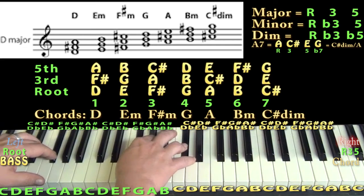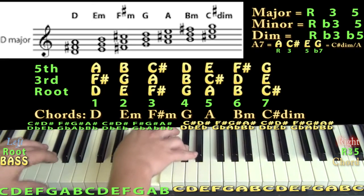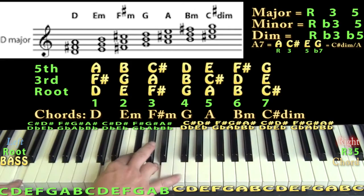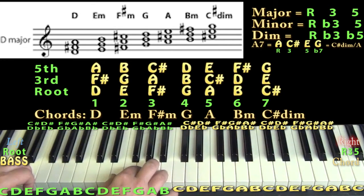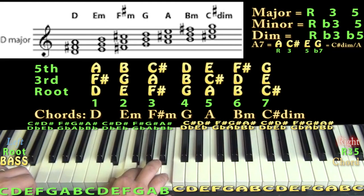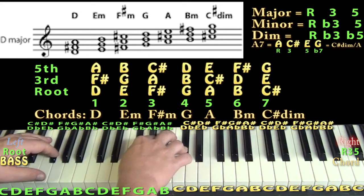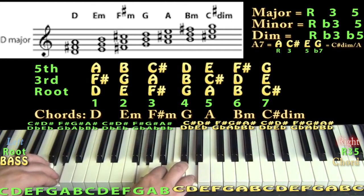What makes a chord minor is the third is just a little bit lower — the flat three. D major is root, three, five. E minor is root, flat three, five: E, G, B. F sharp minor is root, flat three, five. G major is G, B, D — sounds happy again. A major is A, C sharp, E. Then B minor is B, D, F sharp. That pattern through the scale is: major, minor, minor, major, major, minor, diminished.